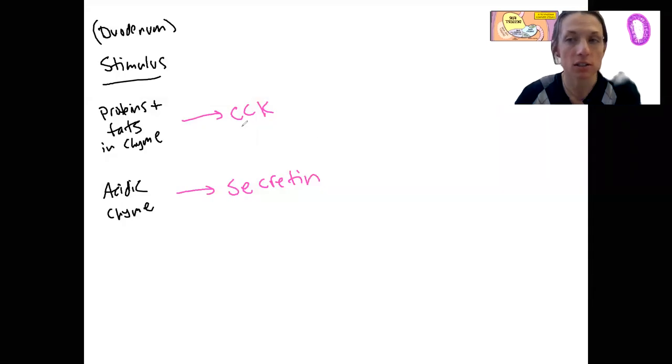These hormones are released from intestinal cells, right? Remember, CCK is released from I cells in the intestinal glands of the duodenum. These two hormones are going to do multiple things, as hormones often do.